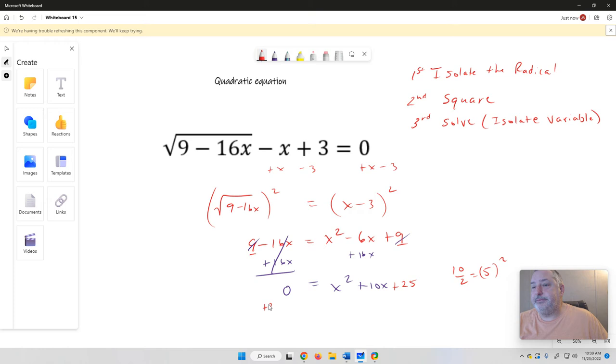Okay, so that gives me 25 equals, and then this becomes x plus 5 squared. That's why we did it, because that's the completing the square process.